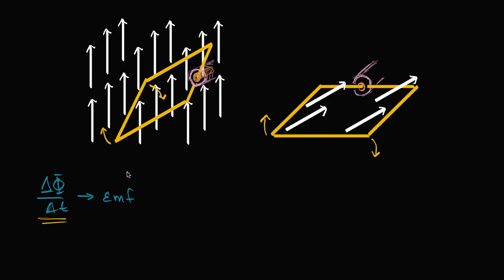The other way we're going to study in this video is inducing an electromotive force by changing not the shape of the loop and not the magnetic field, but by changing the orientation of the loop. In particular, we're going to have the loop rotate.